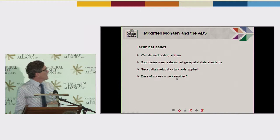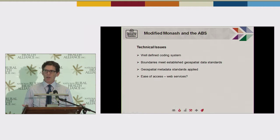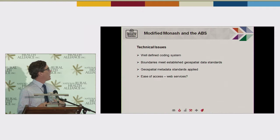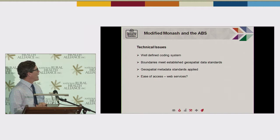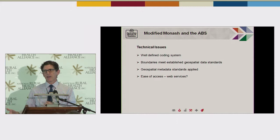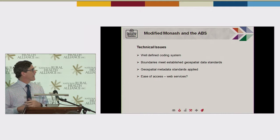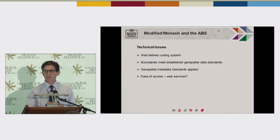There are some technical issues worth highlighting around having a well-defined coding scheme for a geography — and I think the Monash Model has a reasonably developed coding system. Boundaries need to meet established geospatial standards, and Paul's talked about the Esri files that are available, which is a pretty standard format. One thing we're emphasising more and more is that there's certain metadata attached to the geography so it can be used in a range of systems, including allowing ease of access through web services. I can talk to Paul about helping get those things more available through open data sources and things like National Map.